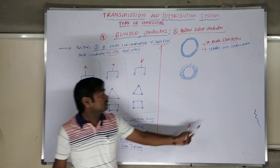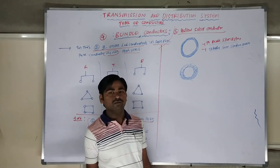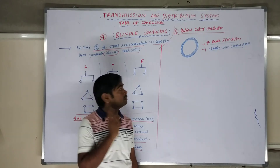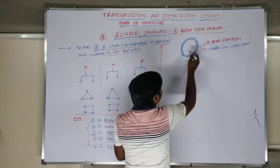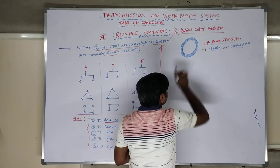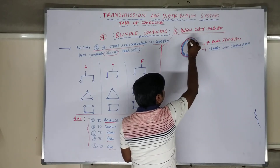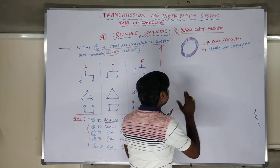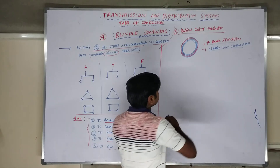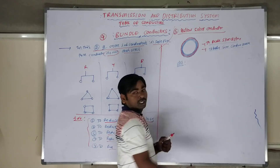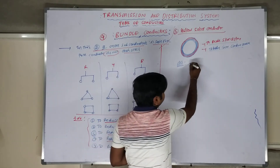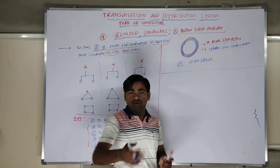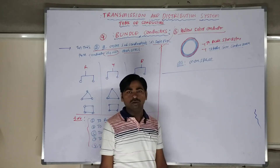The advantage of hollow solid conductor is to save conductor material and reduce the skin effect to a certain extent. However, even with a hollow solid conductor, the skin effect is not fully eliminated — it is not up to the mark. There is still some skin effect. Also, a drawback is that it will occupy more space and more cross-sectional area, meaning larger line supporters are required for R-phase, Y-phase, and B-phase. This is the problem with hollow solid conductors.